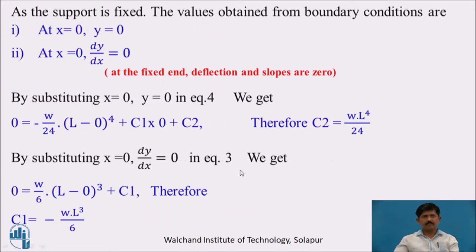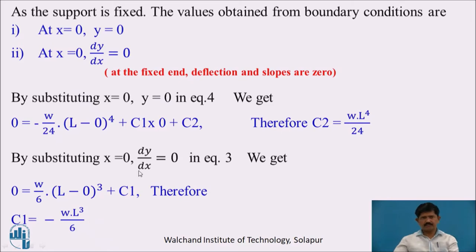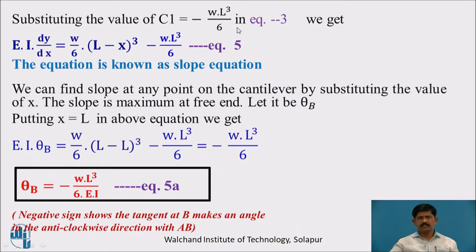As the support is fixed, the boundary conditions are: at x = 0, deflection y = 0; and at x = 0, slope dy/dx = 0. Substituting x = 0 and y = 0 in equation 4: 0 = −(W/24)(L)⁴ + C₁·0 + C₂, giving C₂ = WL⁴/24. Substituting x = 0 and dy/dx = 0 in equation 3: 0 = (W/6)(L)³ + C₁, giving C₁ = −WL³/6.